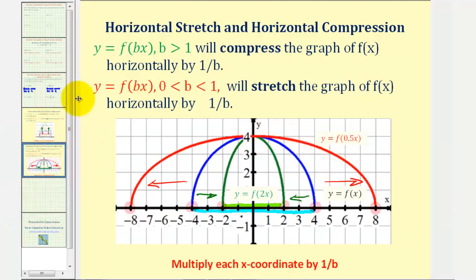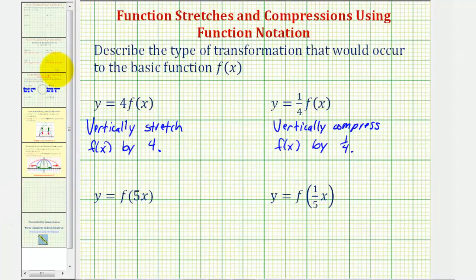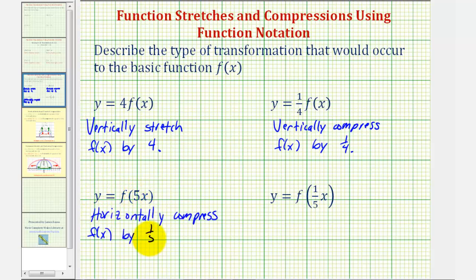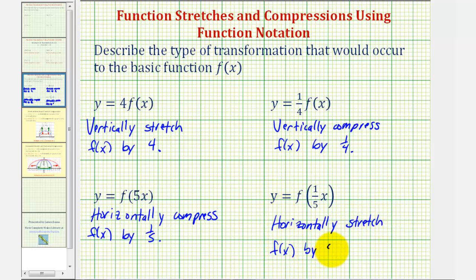So going back to our last two examples, for y equals f of five x, this will horizontally compress f of x by one fifth. And for y equals f of one-fifth x, this would horizontally stretch f of x by five, which is the reciprocal of b.